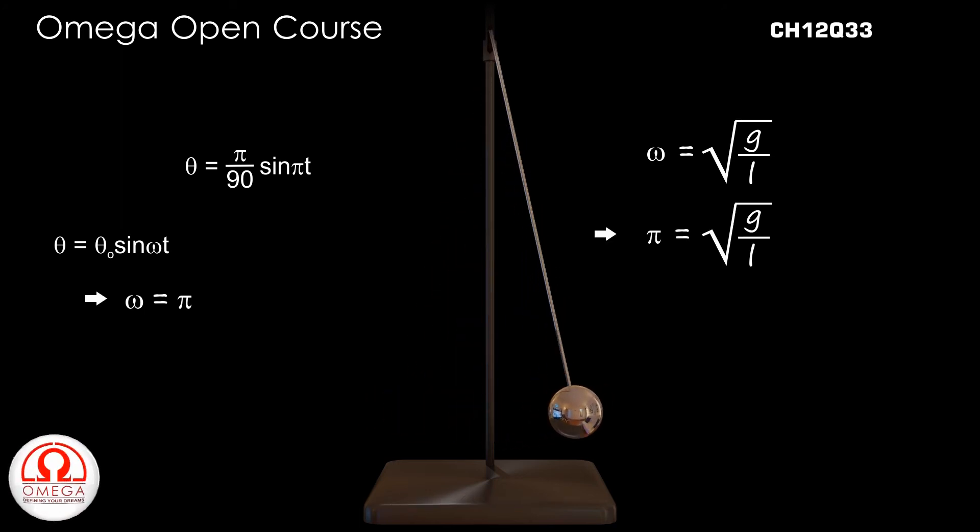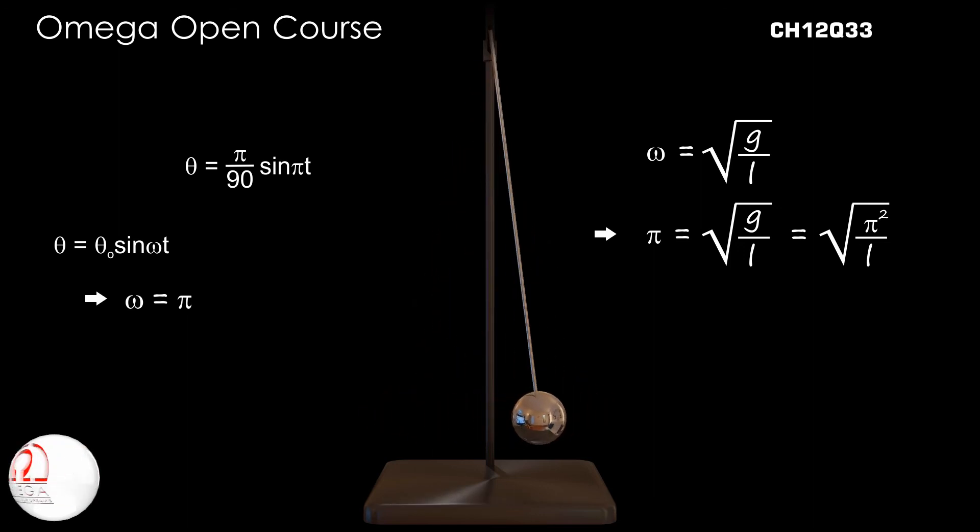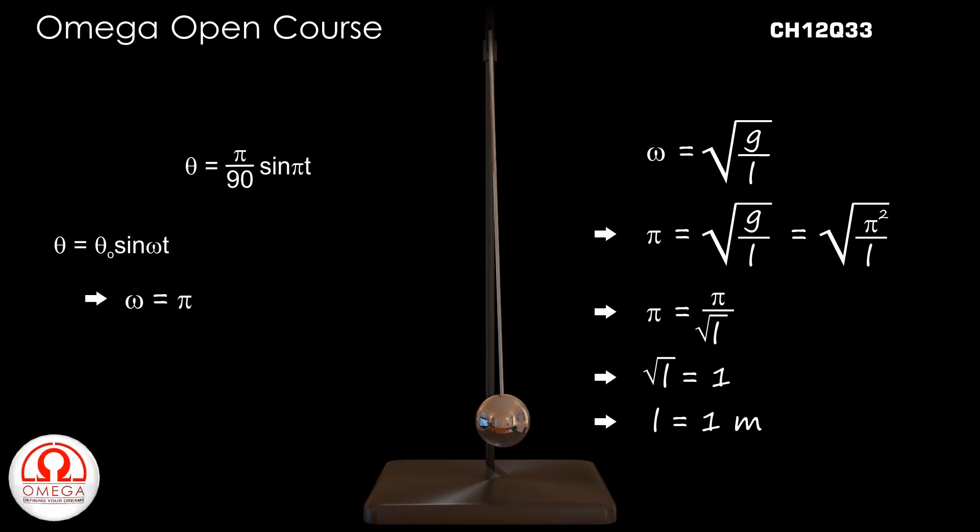Therefore, pi must be equal to root under g by L, or root under pi square by L. Simplifying, we get pi is equal to pi by root L, or root L is equal to 1, or L is equal to 1 meter. This is our answer.